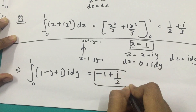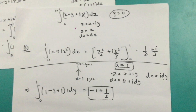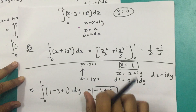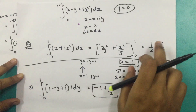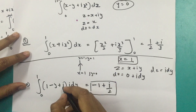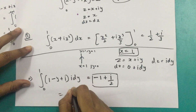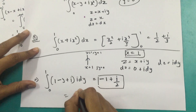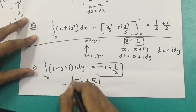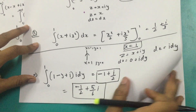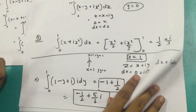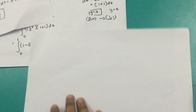Upon adding these two results — (1/2 + i/3) and (-1 + i/2) — you get -1/2 + 5i/6. Do verify it guys, and if you don't get it, please comment below and I'll make sure you understand it.